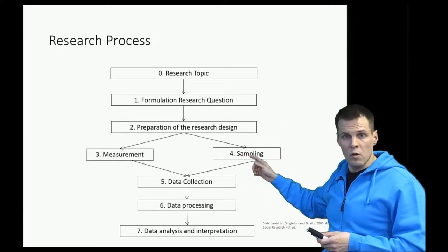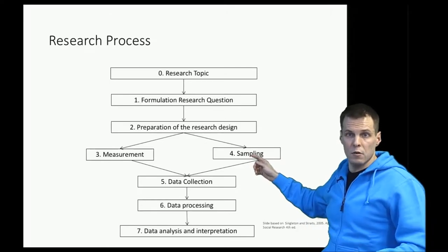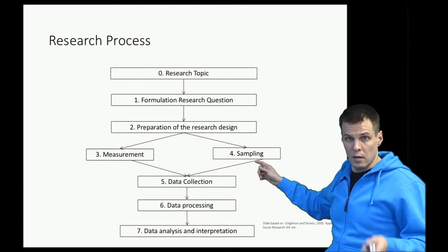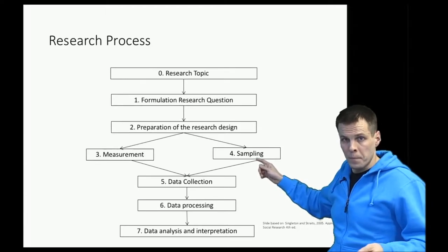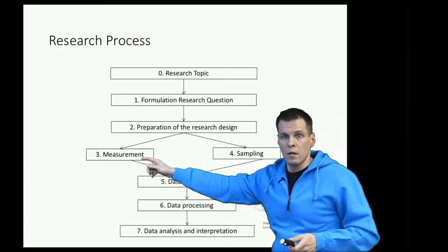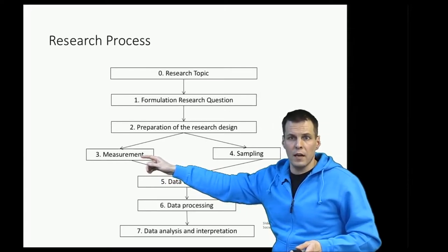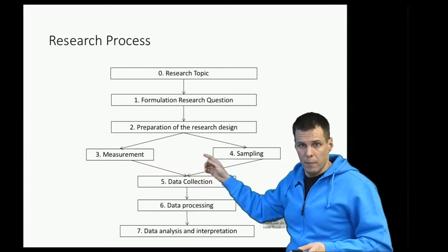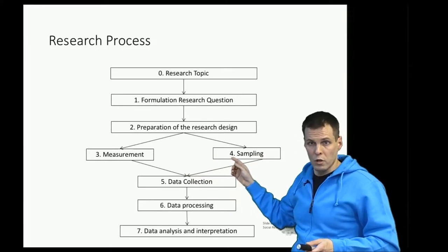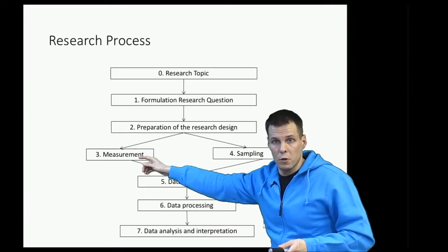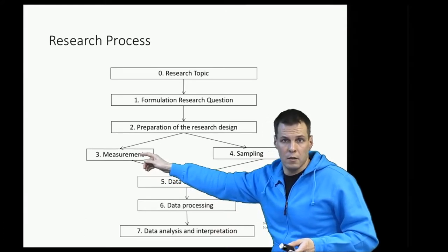One is sampling. So what are the units—people, organizations, projects, whatever the units that you're studying? Which units and how many are you studying? And then we have measurement, which variables we collect. So if we think of our data as an Excel sheet, sampling concerns what are the rows in that Excel sheet, and measurement concerns what are the columns in the Excel sheet.